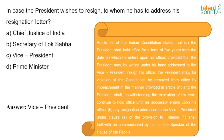The president may for violation of the constitution be removed from office by impeachment in the manner provided in Article 61. The president shall, notwithstanding the expiration of his term, continue to hold office until his successor enters upon the office. Any resignation addressed to the Vice President shall forthwith be communicated by him to the Speaker of the House of the People.